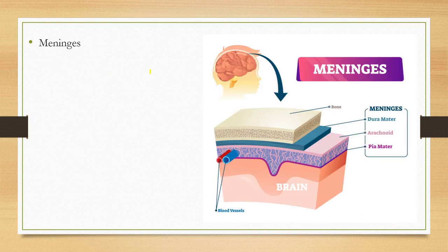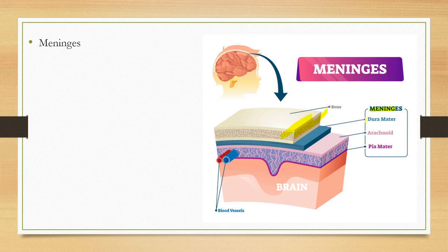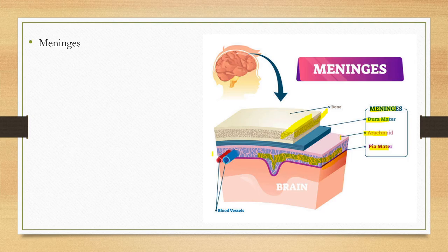The brain and the spinal cord are covered by a triple layer membrane called meninges, which protect the brain from external injury and shocks. The outermost layer is the dura mater, the middle layer is the arachnoid mater, and the innermost is the pia mater. There is a space between the arachnoid mater and the pia mater called the sub-arachnoid space.